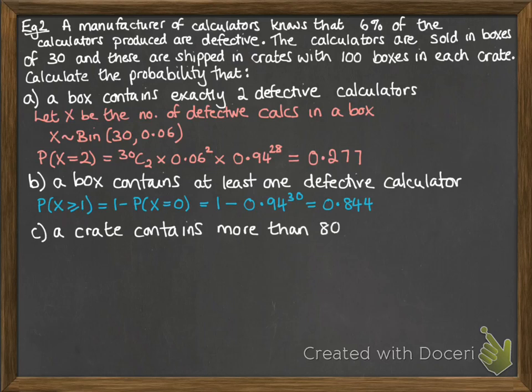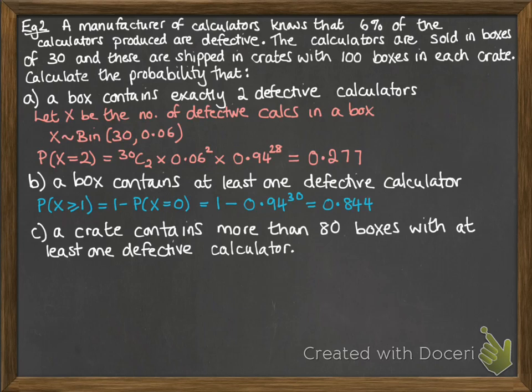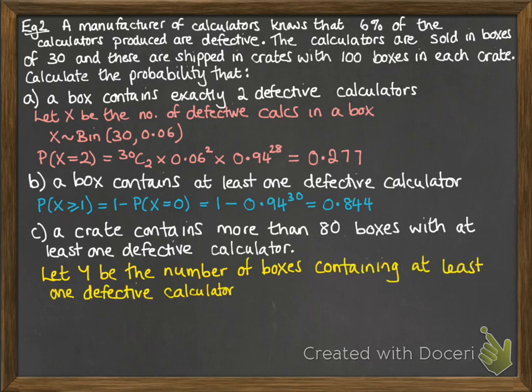Next, a crate contains more than 80 boxes with at least one defective calculator. Now this is very typical in exam questions. You'll have to work out some probability beforehand and go and use it in another distribution afterwards. So now we are talking about the crates. So we're letting y be the number of boxes that contain at least one defective calculator. The probability of the box containing at least one defective calculator we just worked out in part b. So y follows a binomial distribution with 100 boxes in the crate and the probability that each one contains at least one defective calculator is this 0.84 that we found in the previous part.